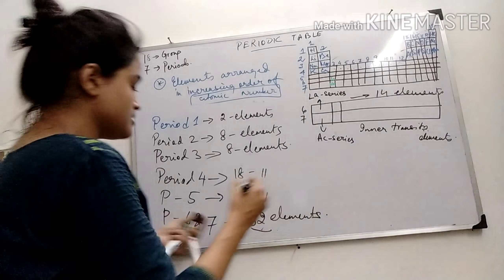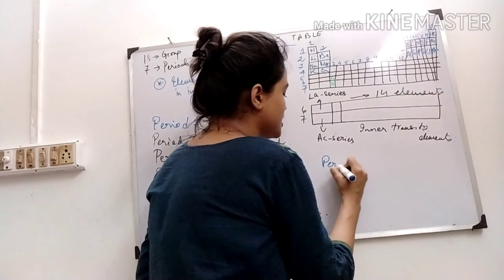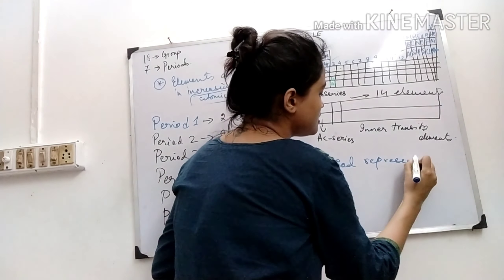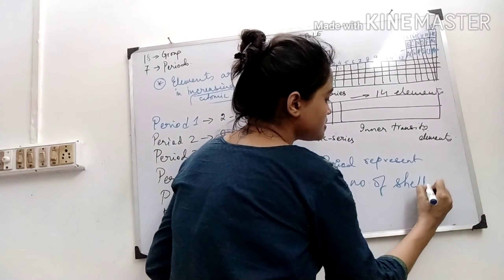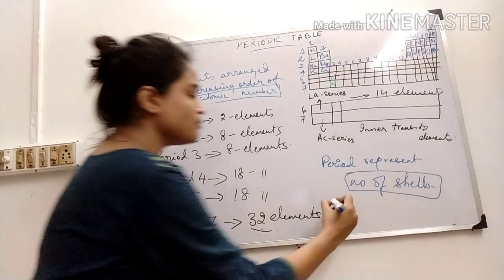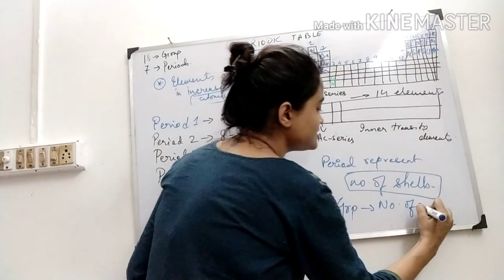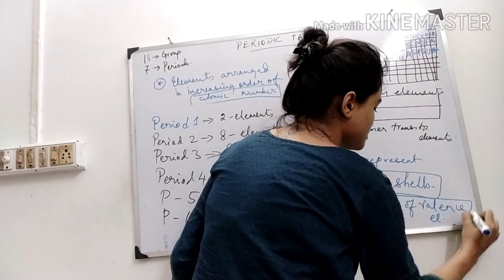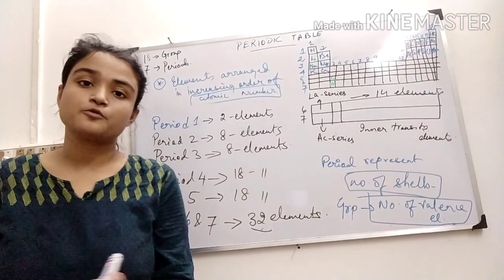Now, what does the period represent? Period represents the number of shells that an element has. Group represents the number of valence electrons. That's why elements are present in group 1, group 2, group 3.